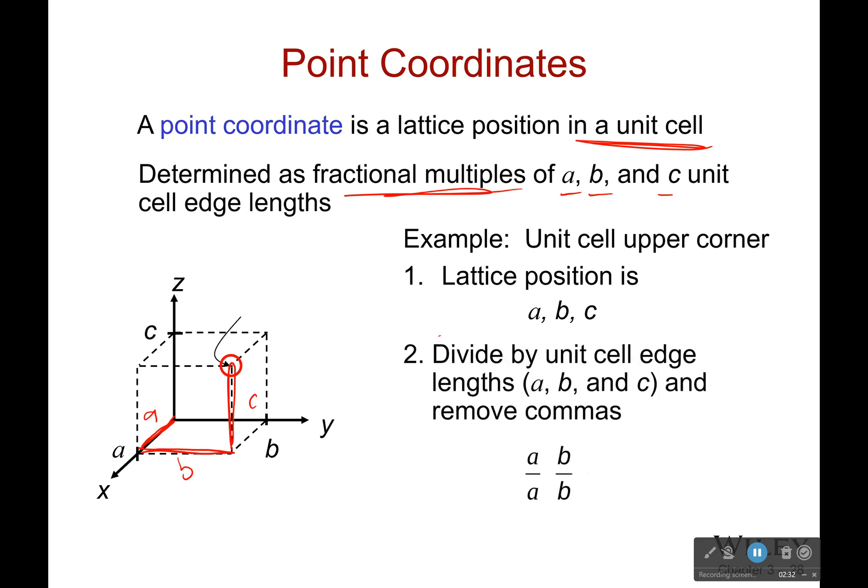Now, after I've figured out what distances I've had to travel, I need to normalize everything. So, I then divide it by the length of each side. Because this is determined as fractional multiples of A, B, and C. So, I divide how far I've gone on the A direction by A, the B direction by B, and the C direction by C. I get 1, 1, 1. That's it. That's the coordinate of this corner right here. 1, 1, 1. Let's try one more real quick before we go on to the next part.